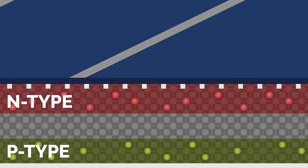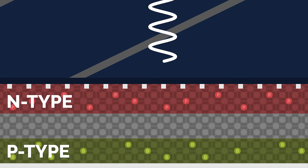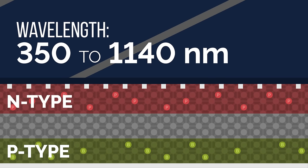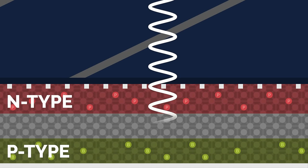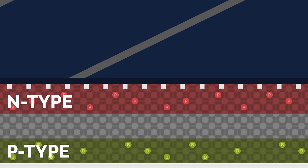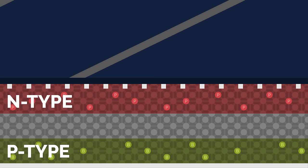When light waves hit the top surface of the silicon solar cell, only light with wavelengths from a specific window of the solar spectrum — 350 to 1140 nanometers — are absorbed into the middle layer of the solar cell. This range of wavelengths includes the visible spectrum. Ultraviolet wavelengths are so short they stop at the surface, and infrared wavelengths are so long they can't be absorbed and pass right through the cell, or are reflected back.